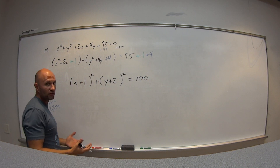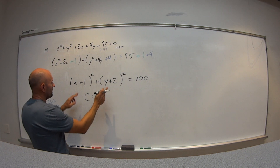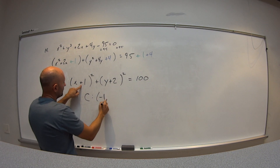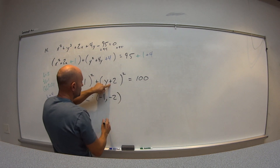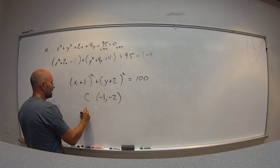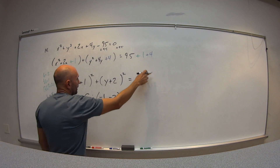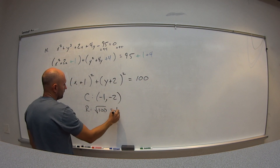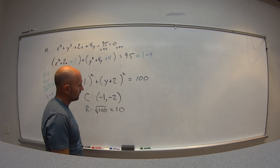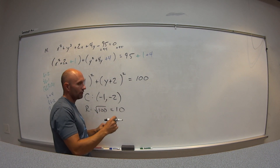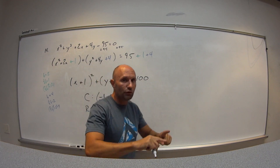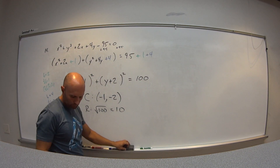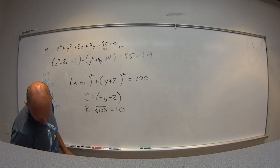Now it's in standard form. The center is the opposite of what I see, so it's negative 1, negative 2. The radius is the square root of the right side: square root of 100, which is 10. This circle has center at negative 1, negative 2 and radius of 10.